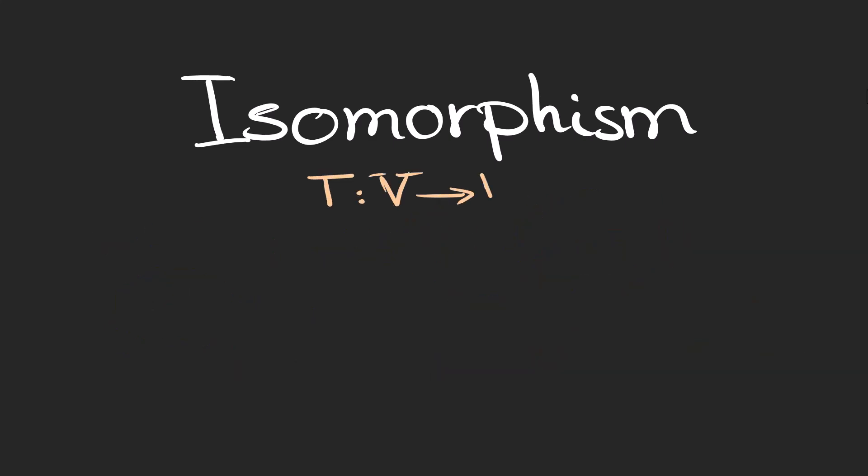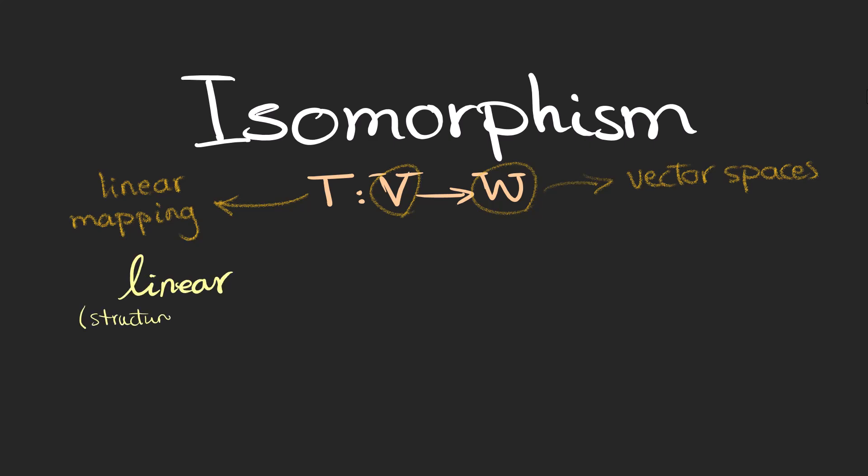We show this mapping from a vector space V to another vector space W in this form. T is a linear mapping and these two are our vector spaces on which the mapping occurs. One of the most important features that is preserved is linearity. And when we say the mapping preserves the structure, it means that under this mapping the vector space remains linear. Also, it is bijective meaning that for every element in W there is one element in V.